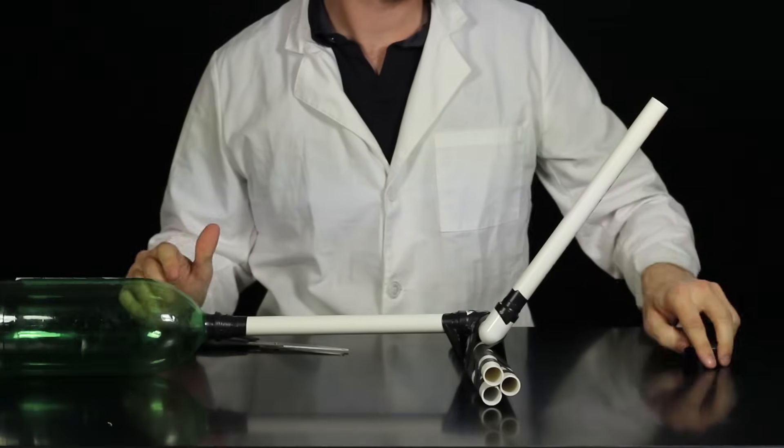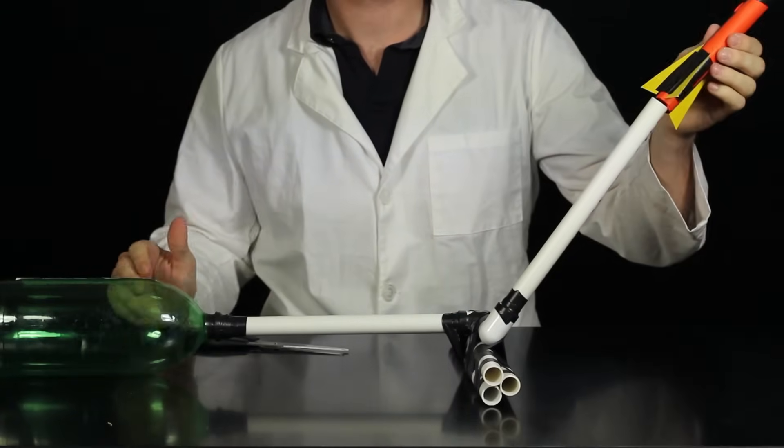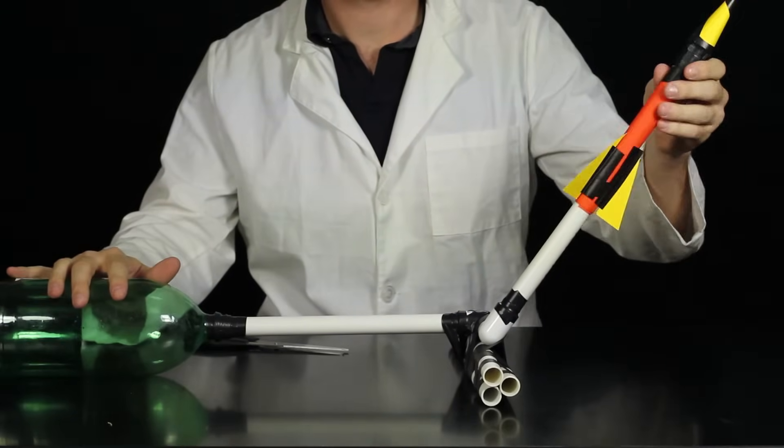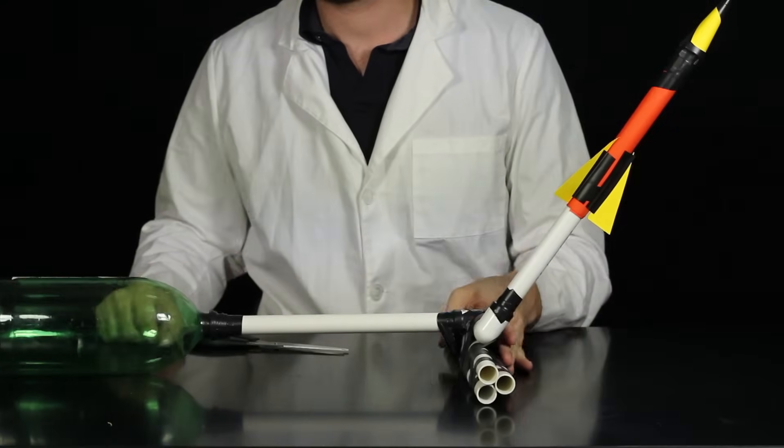Now we just need to build a launcher, and for this launcher we're going to use a 2.0-liter bottle, 1.5-inch PVC pipe, and electrical tape.